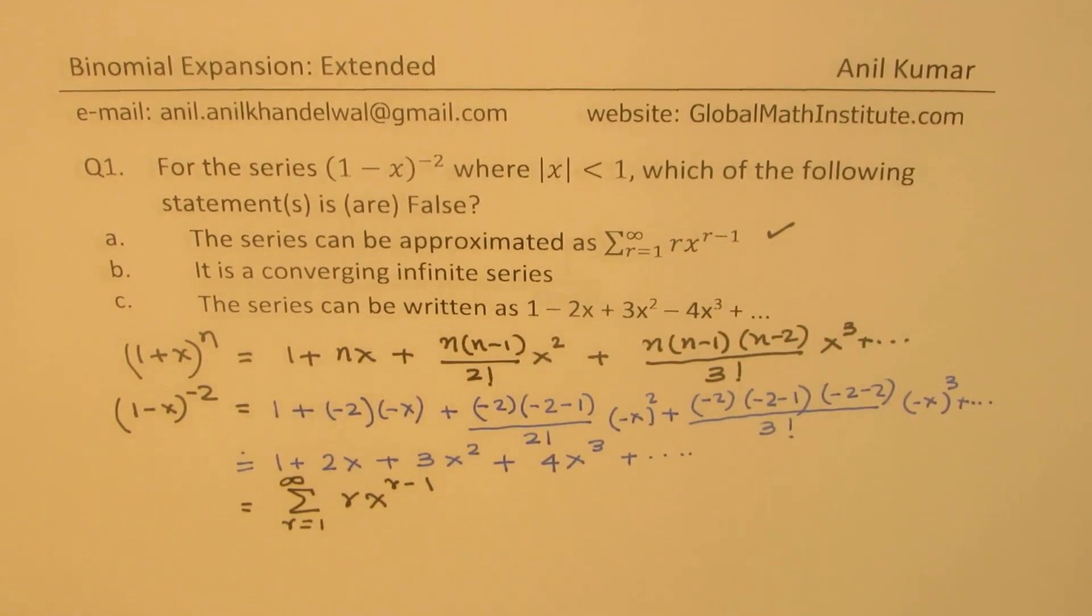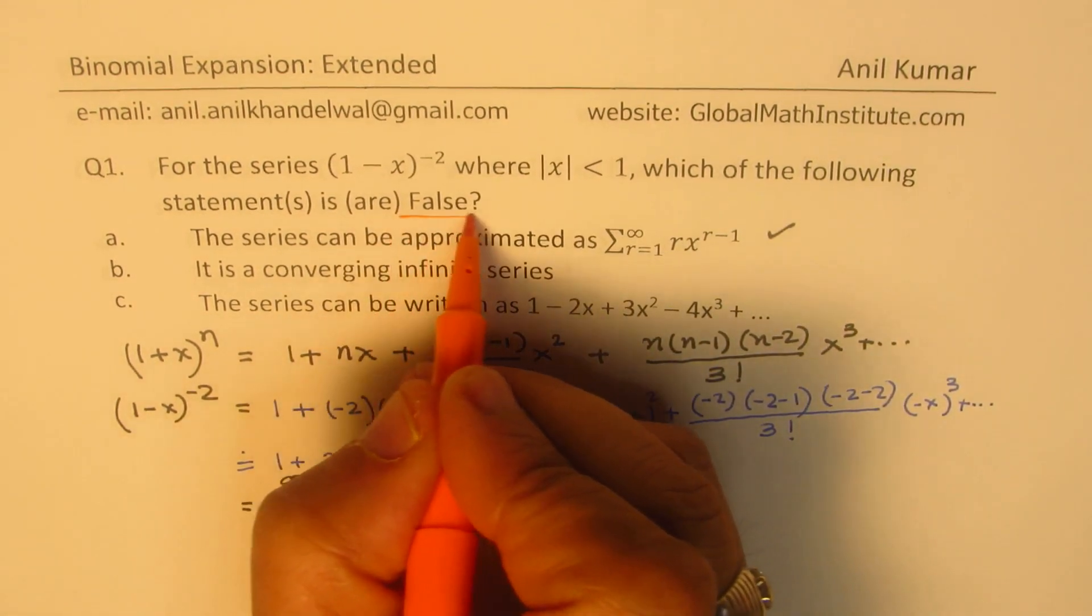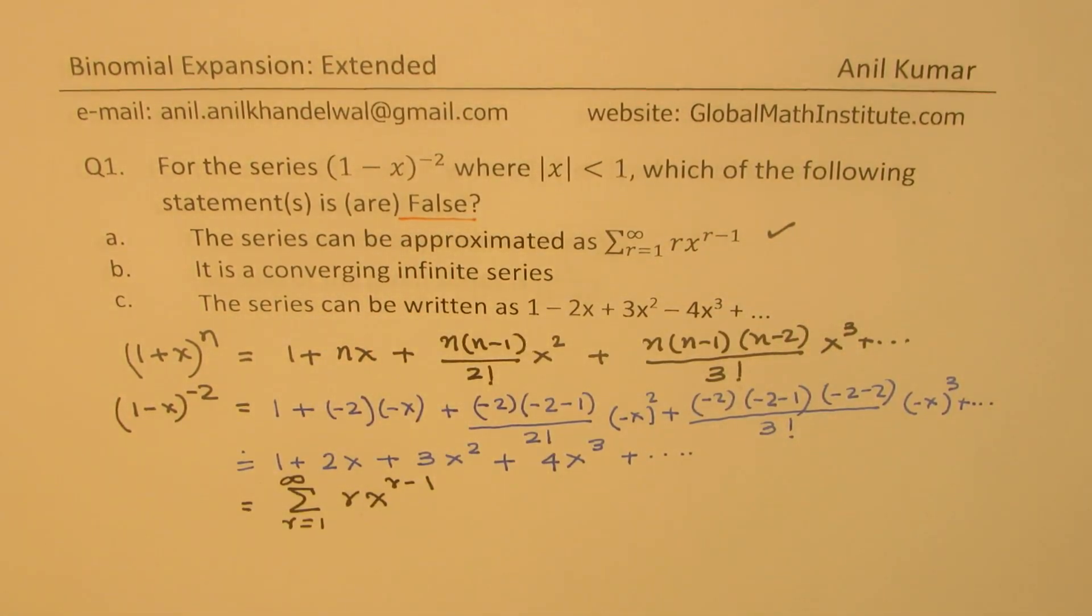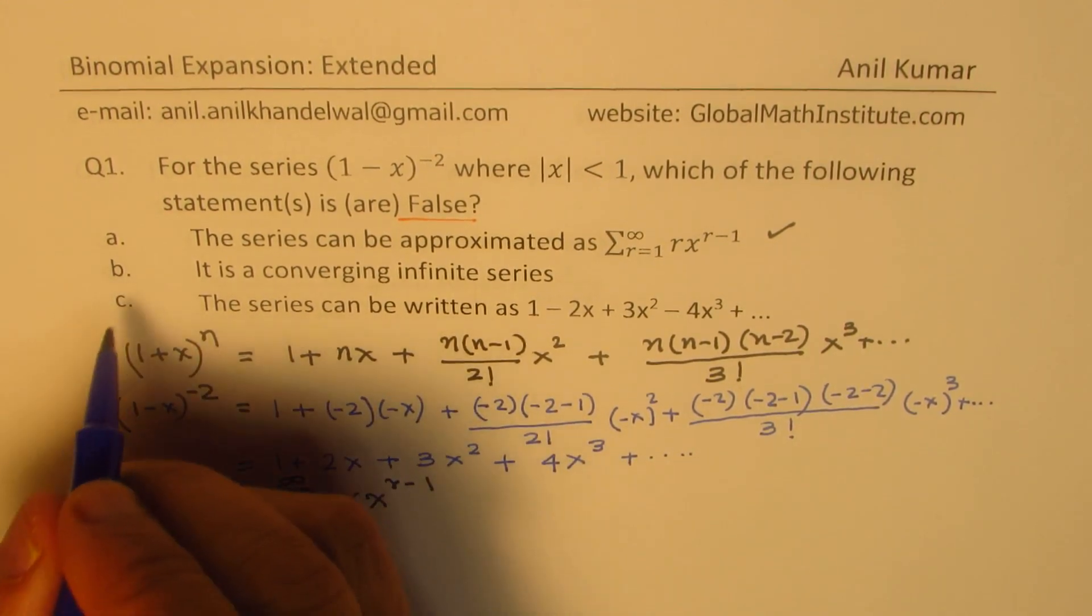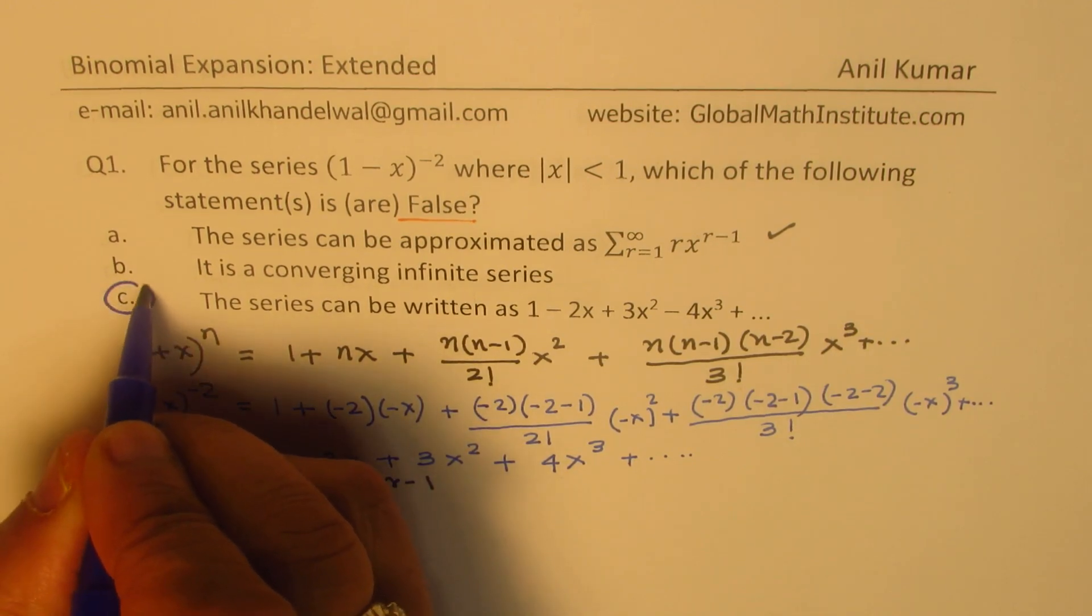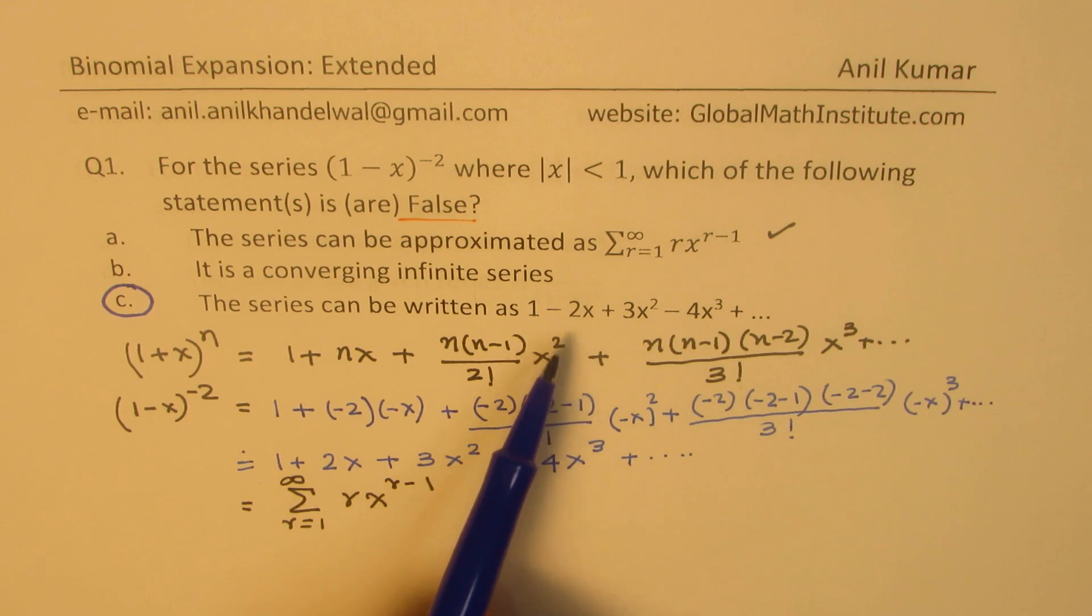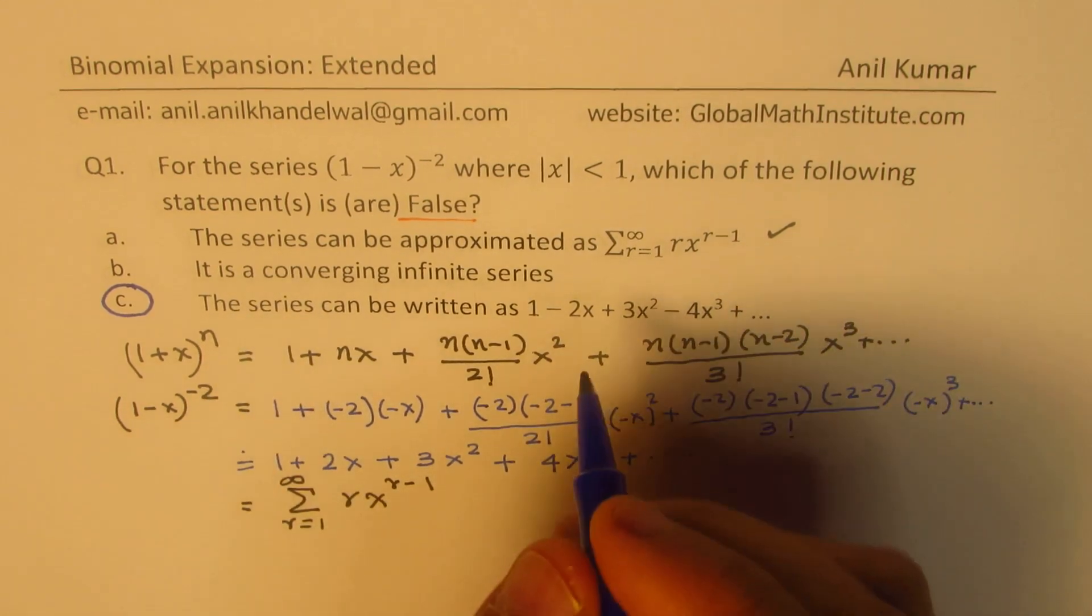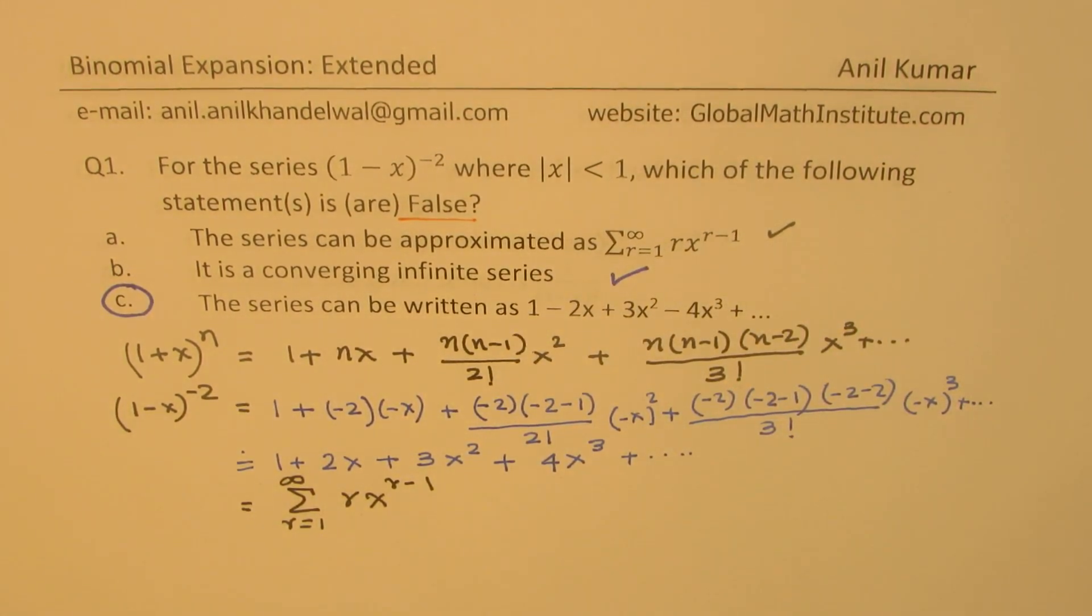Now, we are actually looking for false statements. So you should not circle this one. This is correct. But definitely, what we have got here is a series which has all positive terms. So c is definitely wrong for us. The series cannot be written as shown. We don't have these negative terms, all are positive. We also see that the series is converging, so that is also correct.